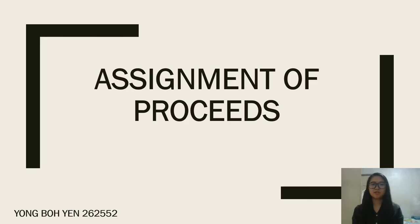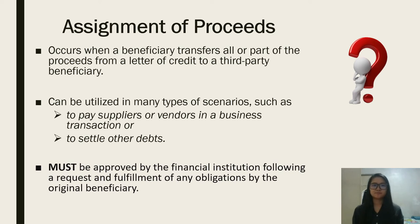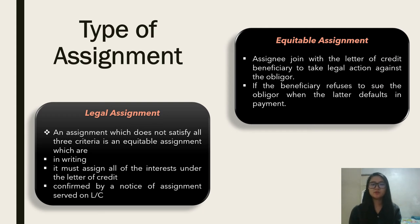My name is Yong Boyan, matrix number 262552. I am going to continue on Assignment of Proceed. Assignment of Proceed occurs when a beneficiary transfers the proceeds from a letter of credit to a third party beneficiary, fully or partially, and can be utilized in many types of conditions such as paying a supplier or vendor in a business transaction or to settle other debts. Assignment of Proceed must be approved by the financial institution following a request and fulfillment of any obligations by the original beneficiary. There are two types of assignment: equitable and legal assignment.